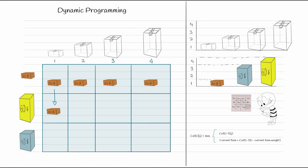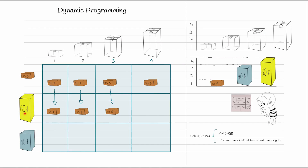For a box of size two, the sixty-dollar item still won't fit, so the maximum benefit again comes from the row above. For box size three, same result — the sixty-dollar item doesn't fit, so we carry over from the top. For a box of size four, both items are available. Sixty is greater than thirty, so he picks the sixty-dollar item. That is the maximum benefit at this level.